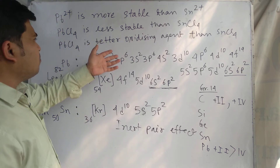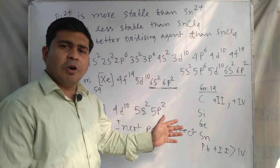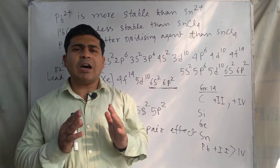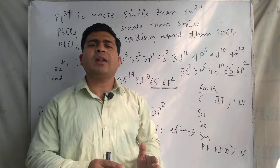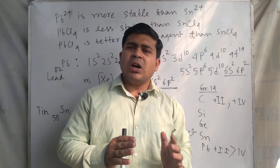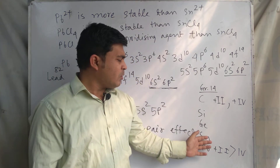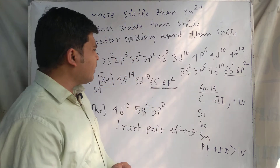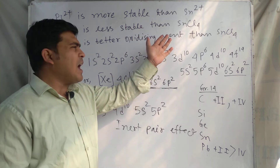The answer to the last question can be given by this logic: the +2 oxidation state of the lower member of the group is more stable than its +4 state, and the +2 oxidation state of the lower member is more stable than that of the upper member. Using these two concepts, you can answer all three questions.